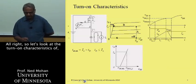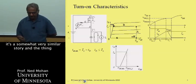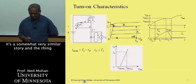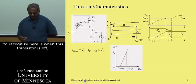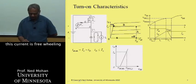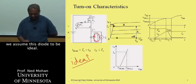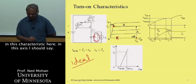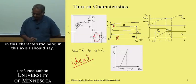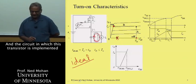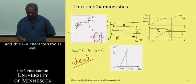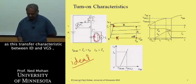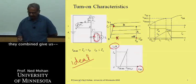Let's look at the turn-on characteristics — it could be a MOSFET or an IGBT, the story is very similar. When this transistor is off, the current is freewheeling through the diode, as shown here. For our purposes, we will assume this diode to be ideal. We are at this off state and want to go to the on state. The IV characteristic and the transfer characteristic between ID and VGS, combined with the circuit, tell us how this transistor is going to switch.